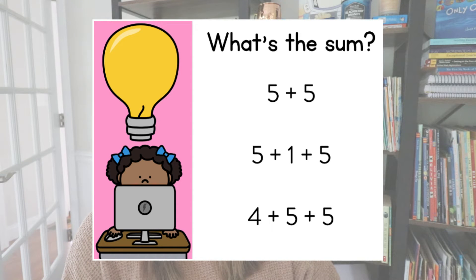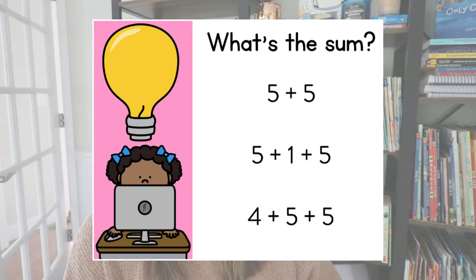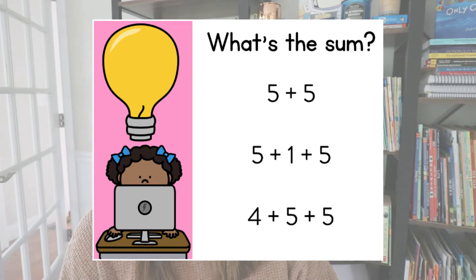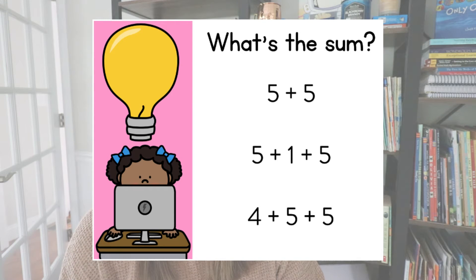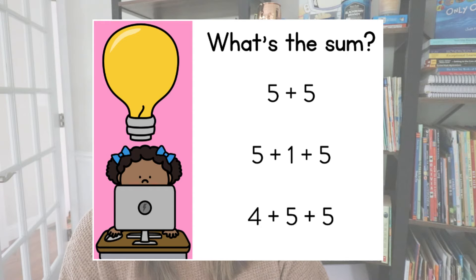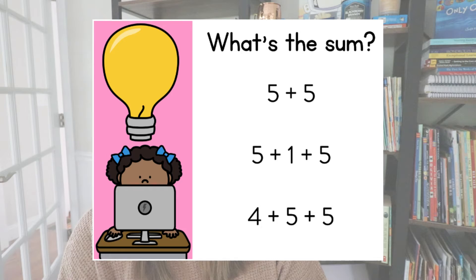Here's a third example that's a bit more difficult — we've moved from visual and representational to the abstract, with only numbers. We have five plus five, which equals 10, and then five plus one plus five. I want students to recognize that five plus five equals 10 from the problem above, so hopefully they add that five plus five first. Then we have four plus five plus five, just rearranging the numbers. That was an example from my making 10s math talks.